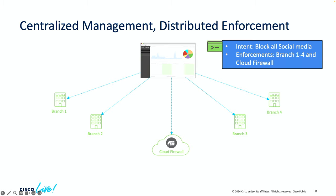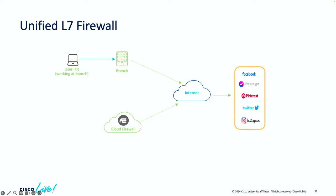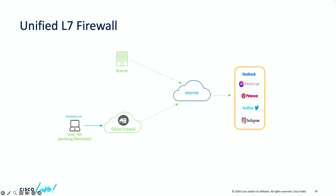Moving to the data plane: a user in the branch tries to go to a social media website like facebook.com. Because the policies are in both places, when they send traffic from the branch, the branch evaluates the same policy and blocks it. Fast forward — the user decides to work from home. They try the same thing. Because the same policy is also enforced in the cloud, traffic comes to the cloud and again gets blocked. This is a single global policy approach where we do centralized management but distributed enforcement.